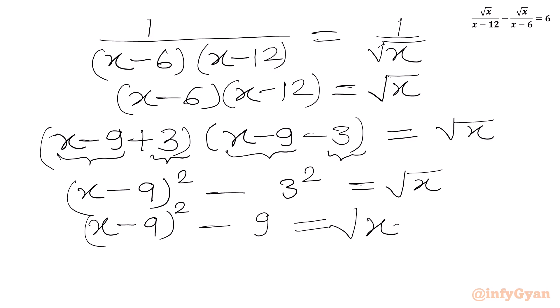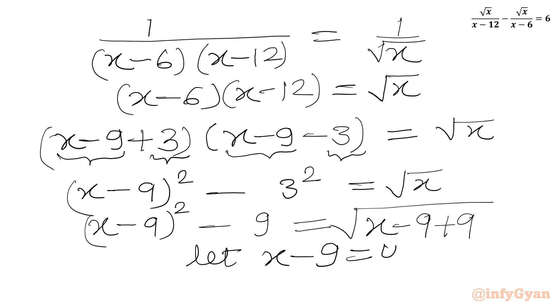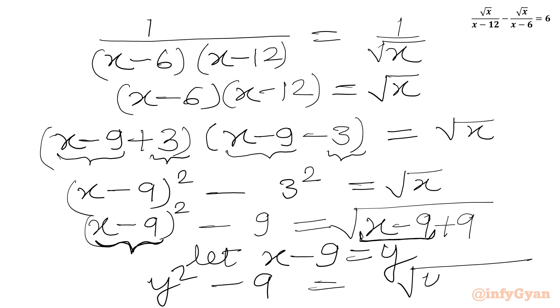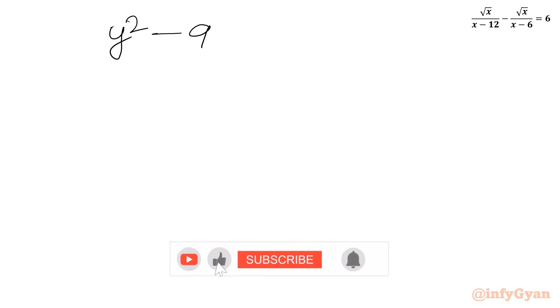I will subtract 9 and add 9, then we apply our substitution. Let x minus 9 equal y. So the equation becomes y squared minus 9 equal to square root of (y plus 9).